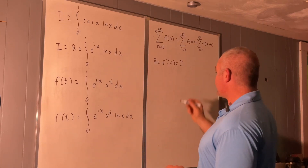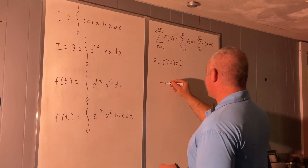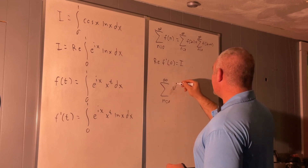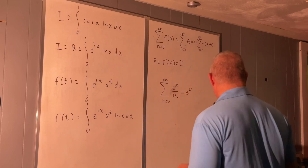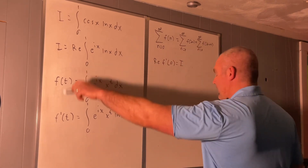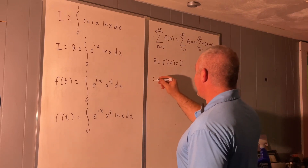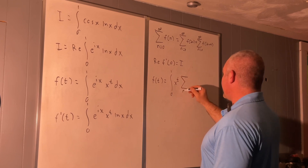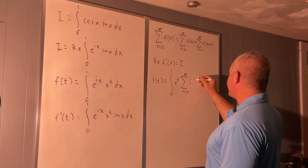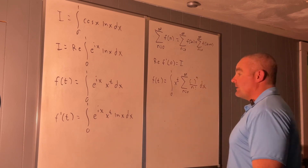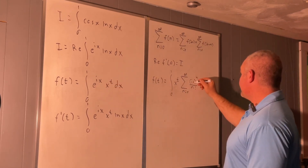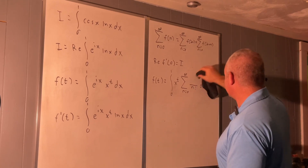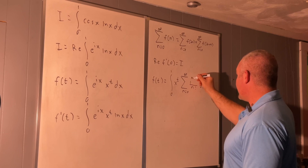We will be using the Taylor series for the exponential function: the sum from n equals 0 to infinity of u to the n over n factorial is equal to e to the u. We'll use that on our f of t, giving us f of t equal to the integral from 0 to 1 of x to the t times the sum from n equals 0 to infinity of something to the n over n factorial dx. That something in this case is going to be x, rewritten as i to the n times x to the n.